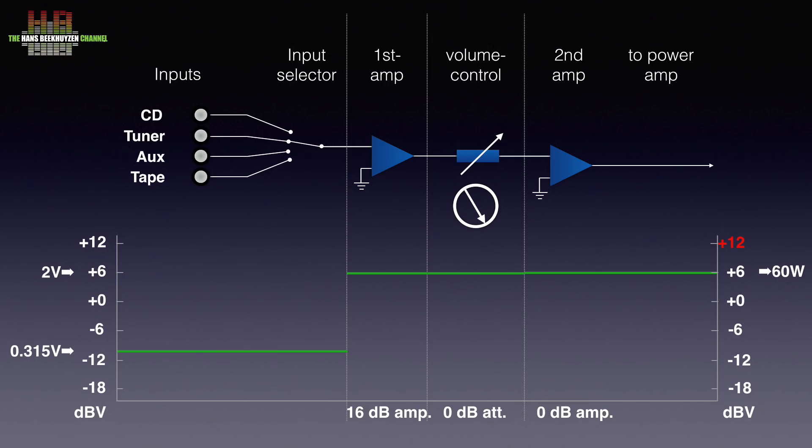If we switch back to the CD player, we see that we have to increase the attenuation by the volume control to 16 dB and hope that the designer has dimensioned the first amplifier stage with sufficient headroom. In practice, the volume control will be in a much lower position since you don't need to drive the power amp up to 60 watts for normal listening. Average power usage under living room conditions is rather around 1 watt.